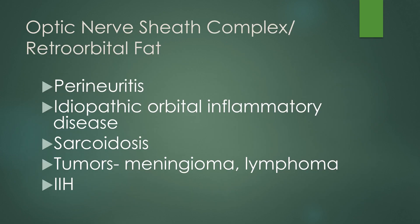For the optic nerve sheath complex and retroorbital fat, we'll be discussing perineuritis, idiopathic orbital inflammatory disease (previously known as pseudotumor), sarcoidosis, tumors such as meningiomas of the optic nerve sheath, as well as lymphoma, and idiopathic intracranial hypertension, also known as IIH.